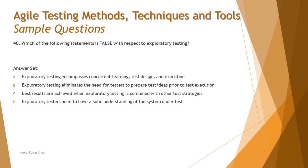Option C says: best results are achieved when exploratory testing is combined with other test strategies. That is of course true — there is no harm in combining two or more techniques to achieve better outputs and coverage, including the confidence of the tester. Option D says: exploratory testers need to have a solid understanding of the system under test. That is also true — exploratory testing is not about randomly clicking on the product. When you have poor specifications, you go into a deep dive exploration of the product to understand it better before executing. The tester needs a good understanding of how the system is used and how to determine when it fails.